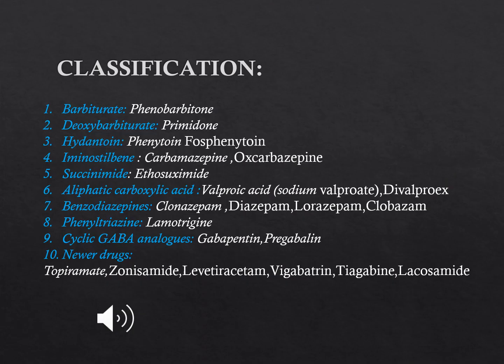Anti-epileptic drugs are classified into: Barbiturates — example Phenobarbitone; Deoxybarbiturates — example Primidone; Hydantoin derivatives — examples Phenytoin and Fosphenytoin; Iminostilbene — examples Carbamazepine and Oxcarbazepine; Succinimide — example Ethosuximide; Aliphatic Carboxylic Acid — example Valproic Acid; Benzodiazepines — Clonazepam, Diazepam, Lorazepam; Phenyltriazine — Lamotrigine; Cyclic GABA analogues — Gabapentin and Pregabalin; and newer drugs including Topiramate, Zonisamide, Vigabatrin, and Tiagabine.